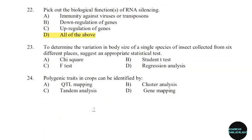23rd question: To identify the variation in body size of a single species of insect collected from six different places, suggest an appropriate statistical test. Correct answer: Option C — F test.